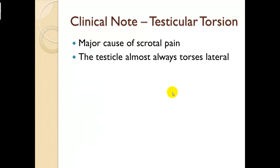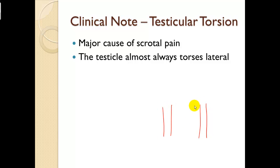Testicular torsion is a major cause of scrotal pain and can cause a person to lose one of their testes. Generally they'll come in and get it seen to, though hypoxia to the testicular area is very painful. The testis almost always rotates laterally, to the outside.